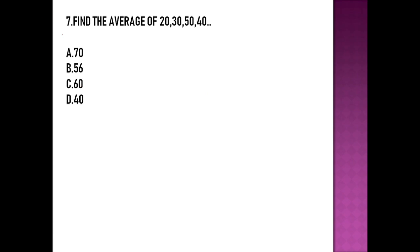Moving to the seventh question: find the average of 20, 30, 15, and 40. For finding the average, we use the formula: sum of the given observations divided by the total number of observations. So we find the sum of 20, 30, 50, and 40.